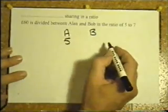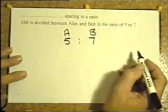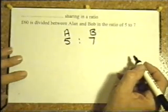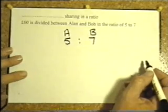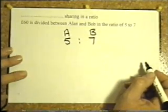5 to 7. So you can either write the word TO or the two dots representing two. So £60 between Alan and Bob in the ratio of 5 to 7. Now if you have these two values together you get 12. That means to say that they're going to be 12 parts.